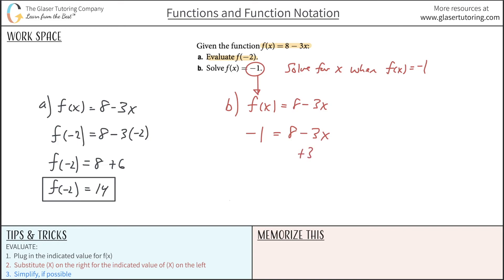So I'm going to add the 3x over to the left-hand side, and I'm going to add the positive 1 over to the right-hand side. So this would cancel, this would cancel, leaving me now with 3x is equal to 9. Divide out the 3 so I know x is then equal to 3.